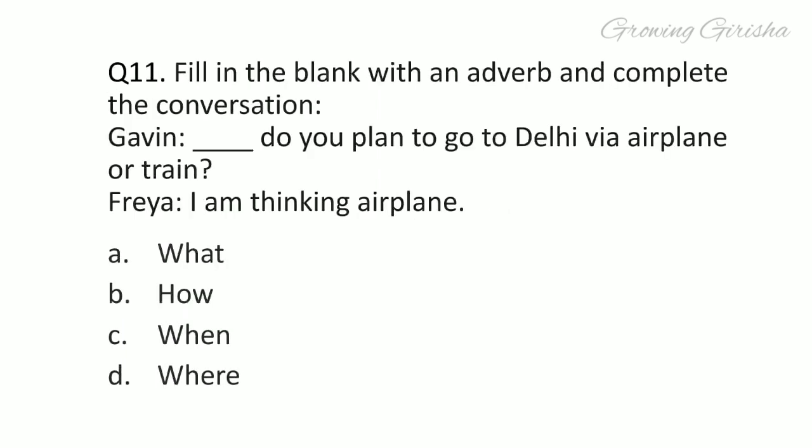Question 11: Fill in the blank with an adverb and complete the conversation. Gavin: Dash, do you plan to go to Delhi via airplane or train? Freya: I am thinking airplane. Answer is option B: How?